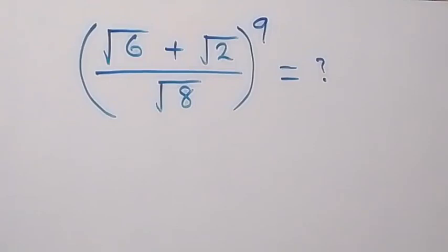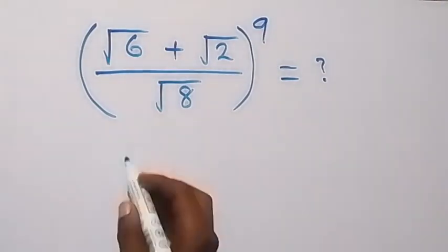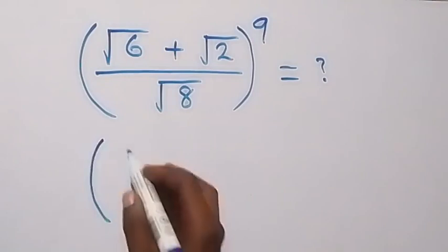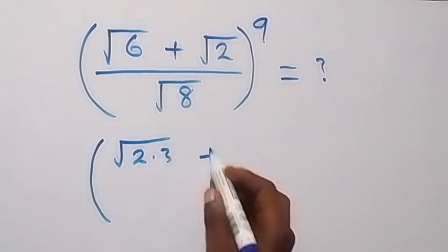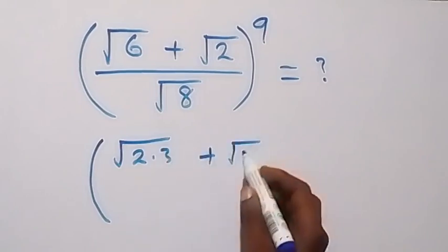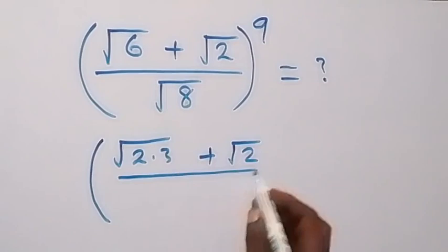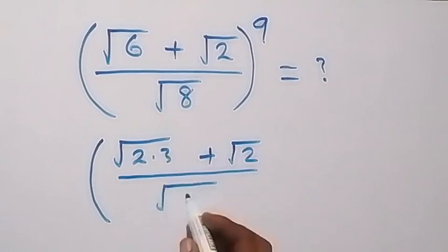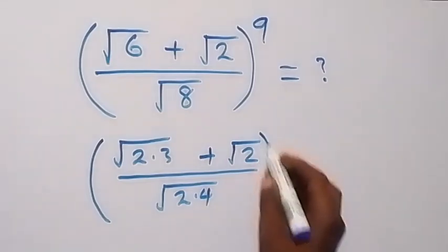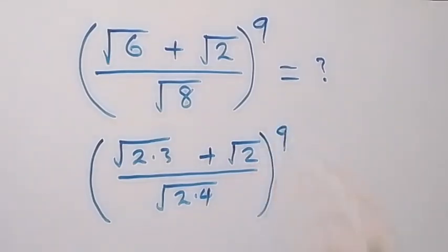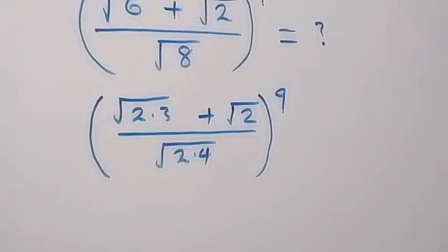Hello, you are welcome. How to solve this nice square root math problem. From here we can rewrite what we have as square root of 2 times 3, plus root 2, then over root 2 times 4, and all raised to power 9.